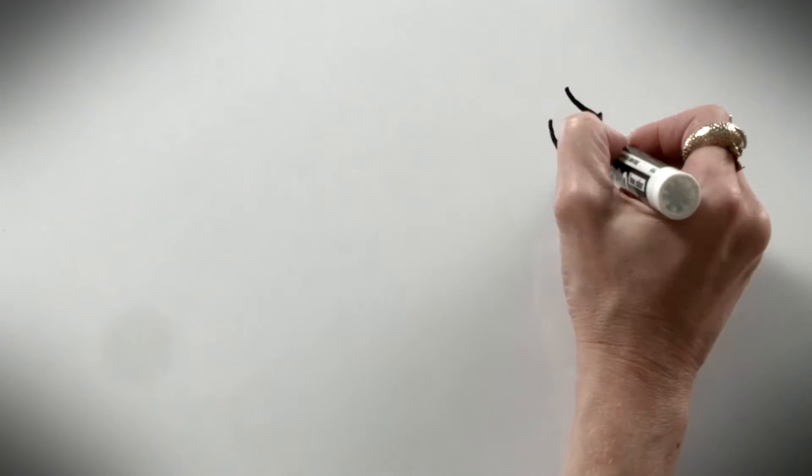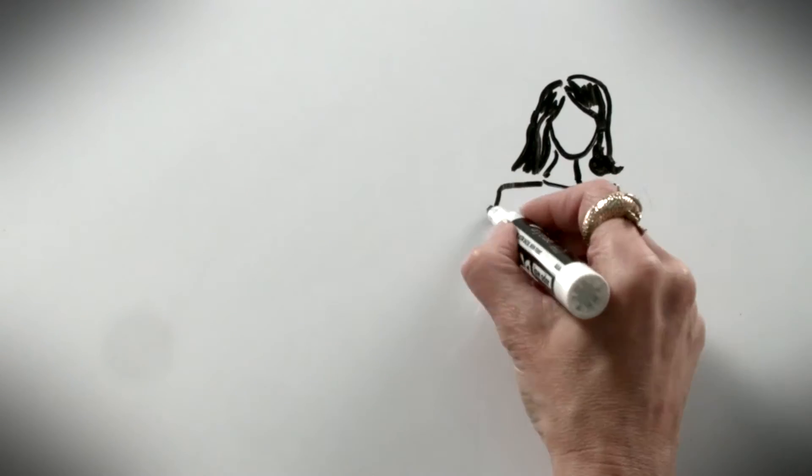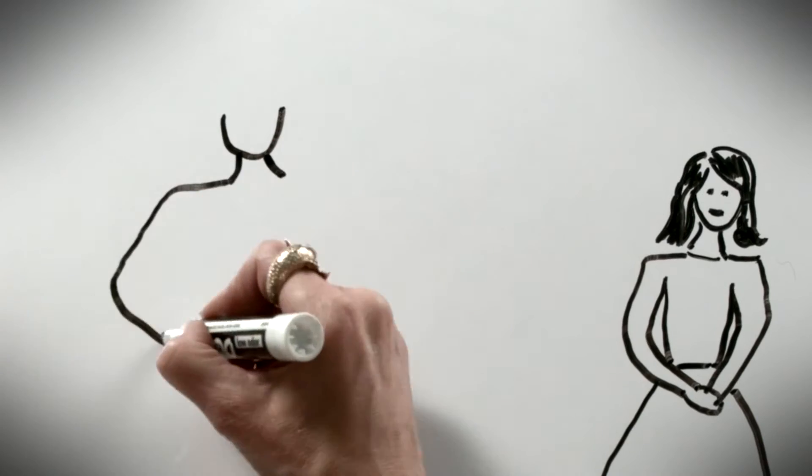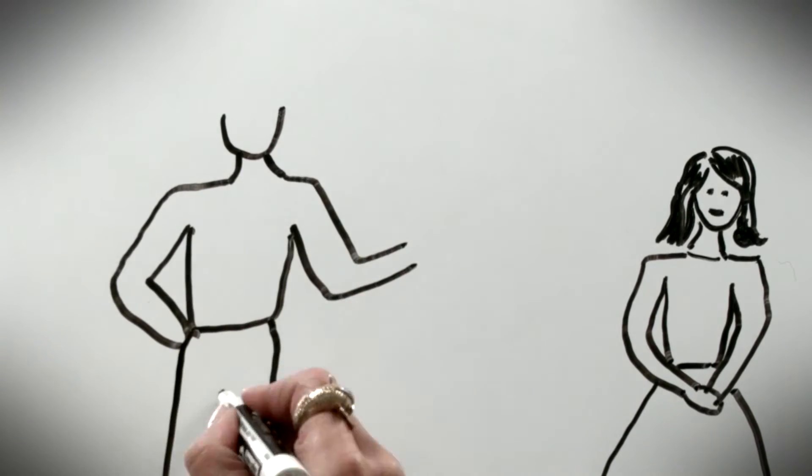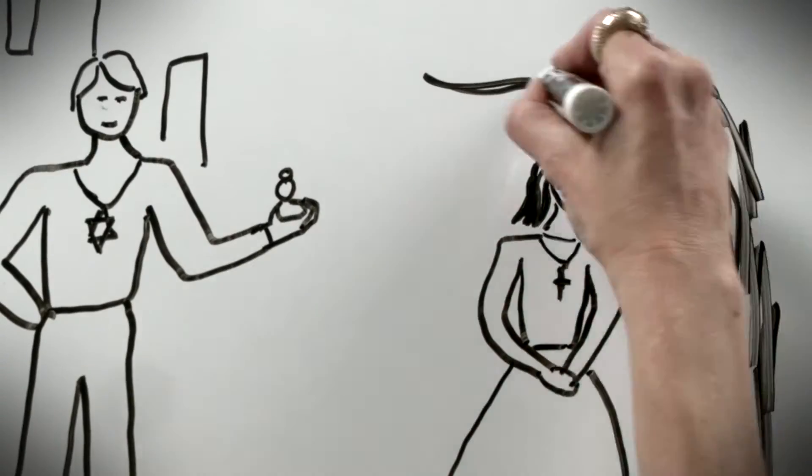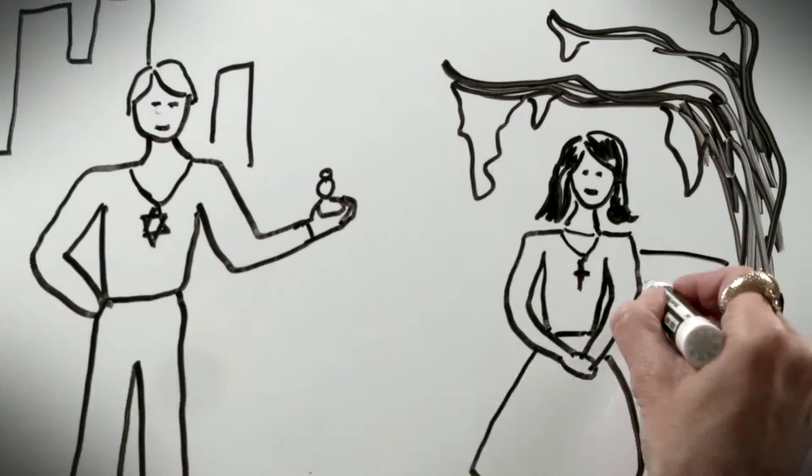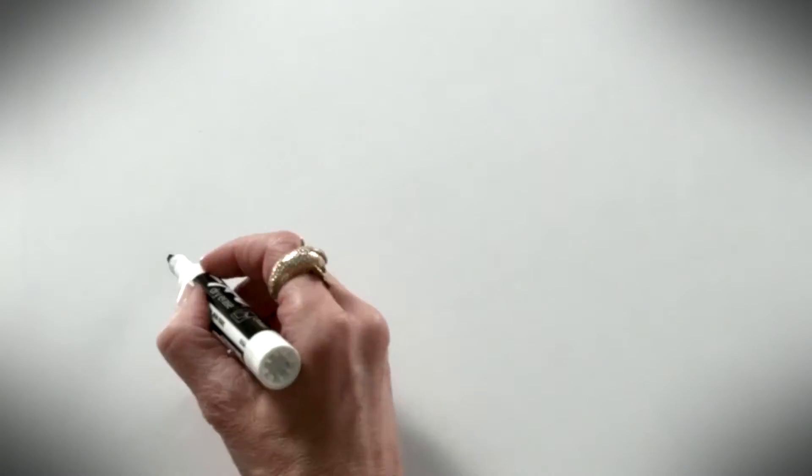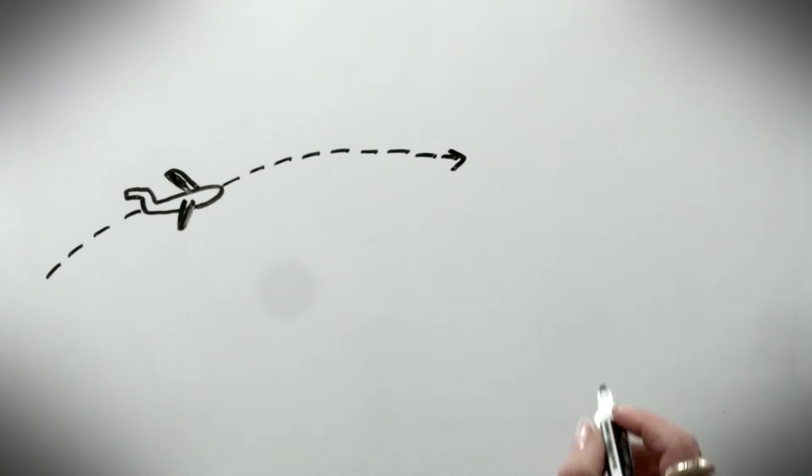My parents eloped because of religious differences. My mom's family was Catholic from Louisiana and wanted her to get married in the church. Dad was from New York and Jewish and he didn't want to do that, so he said leave it all behind and she did. They joined the Peace Corps and went to India.